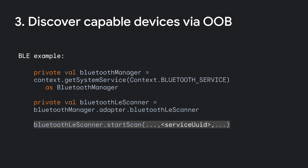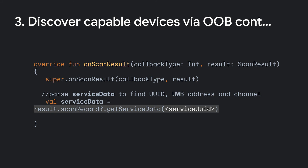The next step is to discover and create the OOB connection between the devices. With BLE in this example, it is as simple as getting a reference to the BLE scanner, configuring it with the appropriate service UUID, and doing a regular Bluetooth scan. If your app is going to be both controller and controlee, this service UUID is usually defined by the app. If the app is only a controlee for another controller, that ID will be provided by the device manufacturer. When you use BLE as an OOB mechanism, all the information about the UWB device can be extracted directly from the service data byte stream returned by each scan record object. The key pieces of information to search for are the UUID, the UWB address, and UWB channel.